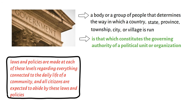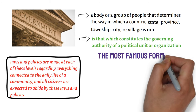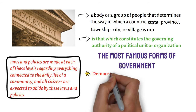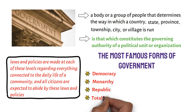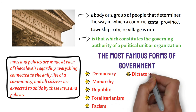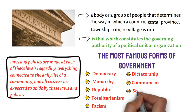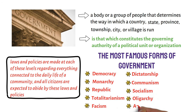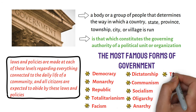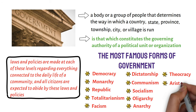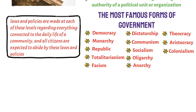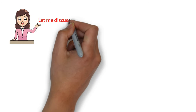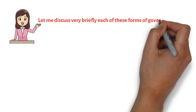Some of the most famous forms of government are Democracy, Monarchy, Republic, Totalitarianism, Fascism, Dictatorship, Communism, Socialism, Oligarchy, Anarchy, Theocracy, Aristocracy, and Colonialism. Let me discuss very briefly each of these forms of government.